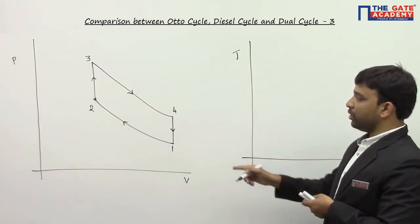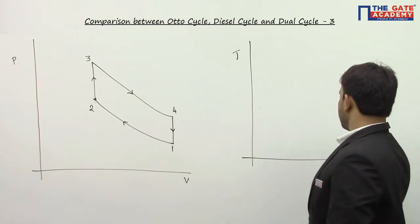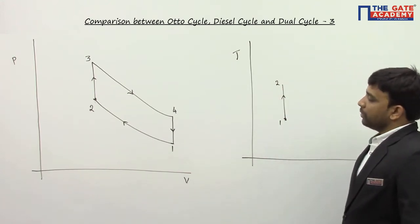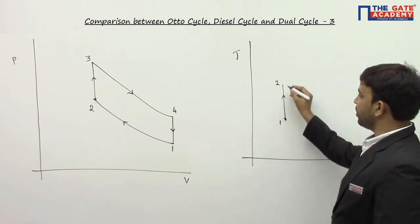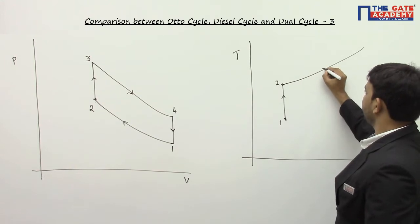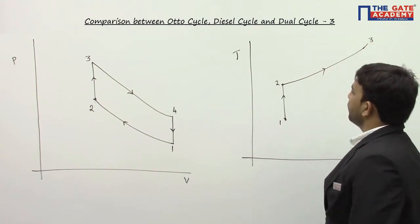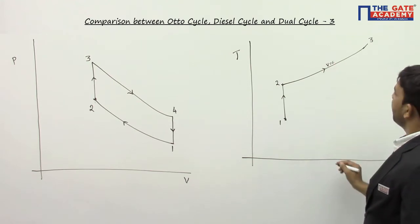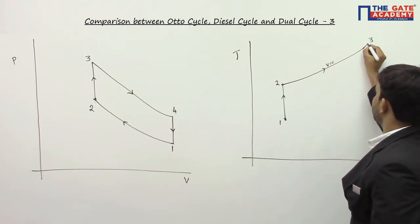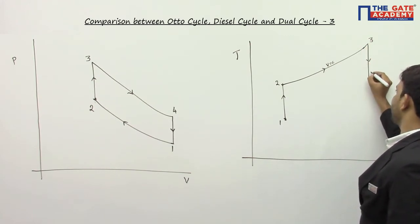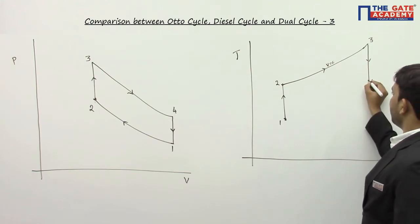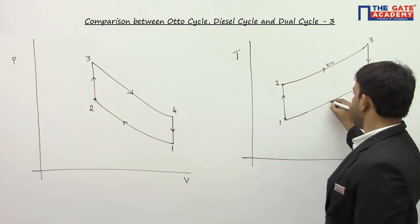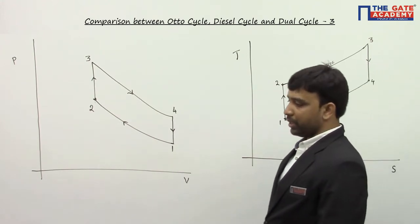Now drawing the same diagram in TS coordinates. Process 1 to 2 is isentropic compression — entropy remains constant and temperature increases during compression. Process 2 to 3 is constant volume heat addition — both temperature and entropy increase. Process 3 to 4 is isentropic expansion — entropy remains constant and temperature decreases. Process 4 to 1 is constant volume heat rejection — both temperature and entropy decrease. This is the Otto cycle in both TS and PV coordinates.